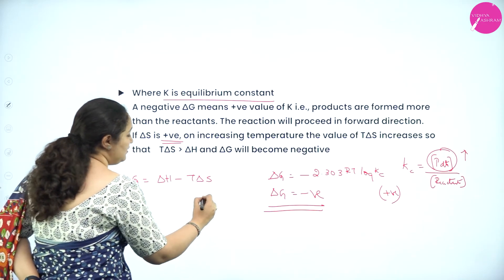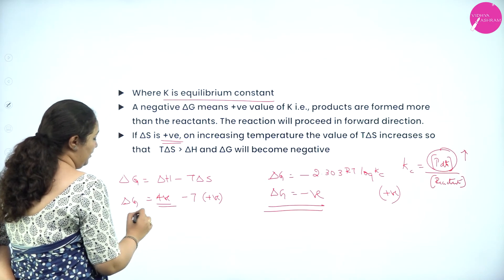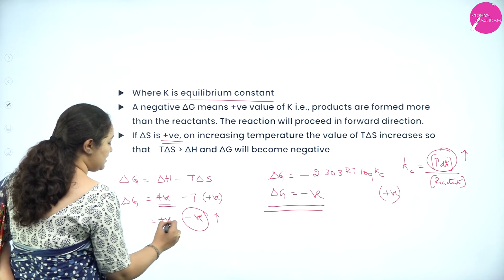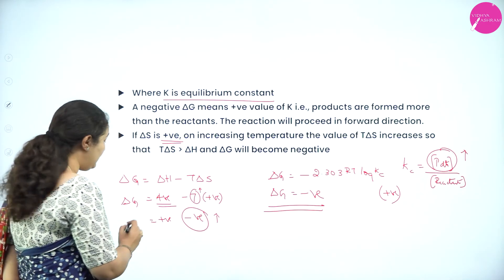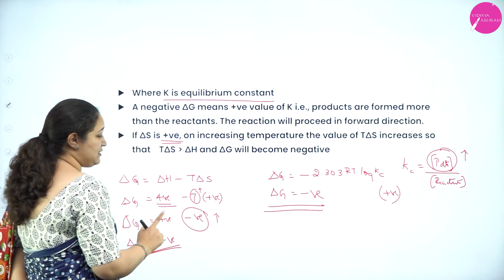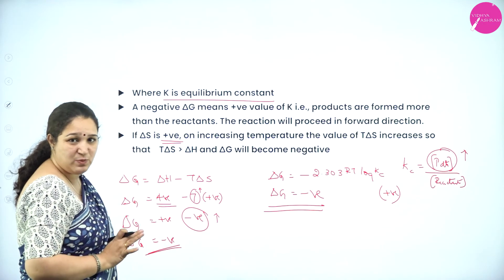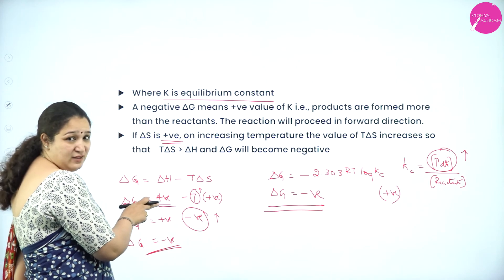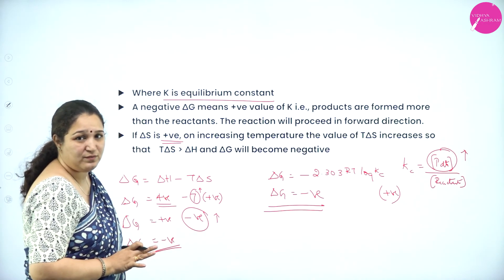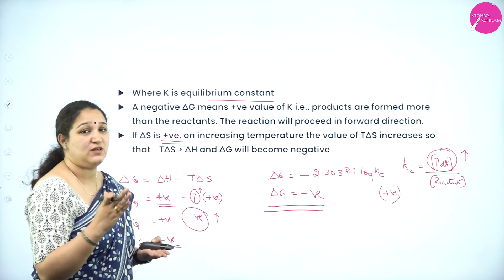If ΔS is negative and ΔH is also positive, then ΔG is always positive, so the process is not feasible. For ΔG to be negative, either ΔS must be positive at a sufficient temperature, or ΔS must be a negative value with TΔS lesser in magnitude than a negative ΔH. We have to assess these thermodynamic conditions to determine if the reduction process is feasible.